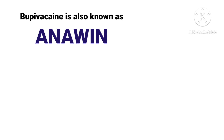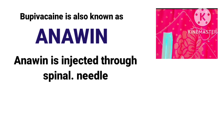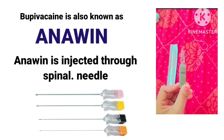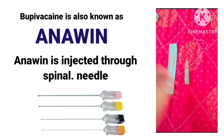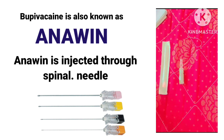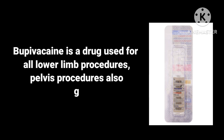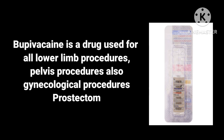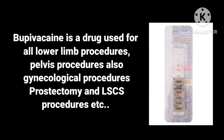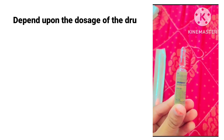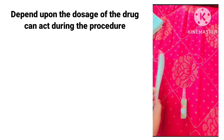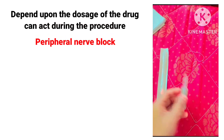Bupivacaine is injected through a spinal needle. It comes as a 4 ml ampule. It is used for all lower limb procedures, pelvic procedures, and also for gynecological procedures, prostatectomy, and LSCS procedures.